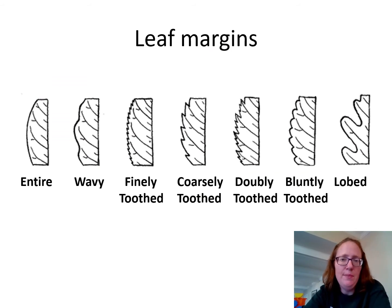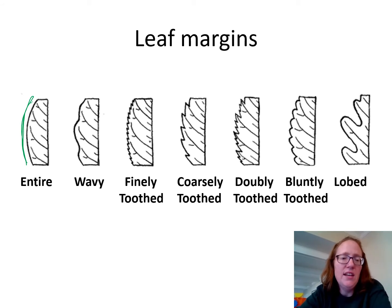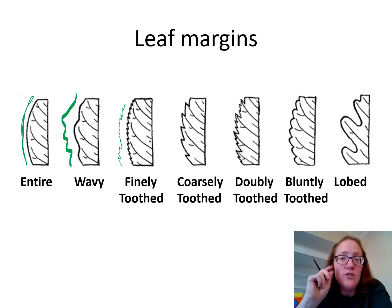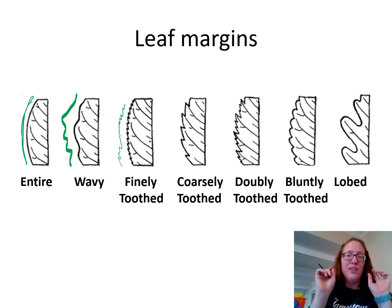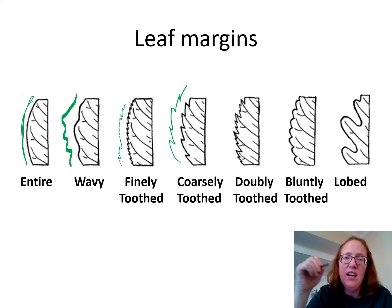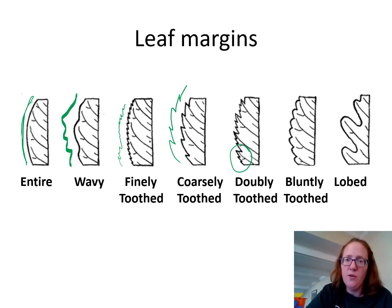The next characteristic to keep in mind is the margins of the leaf — what the edges look like. Edges that are smooth are called entire. A slight wave to it is called wavy. Finely toothed means it has very tiny little teeth that from far away might look entire, but up close you can see them. Coarsely toothed has much more pronounced, bigger teeth visible even from afar. Doubly toothed means the teeth have teeth — bigger teeth with tiny little teeth on each of those. These are the ones we'll really be focusing on in this course.